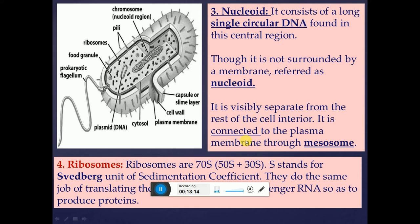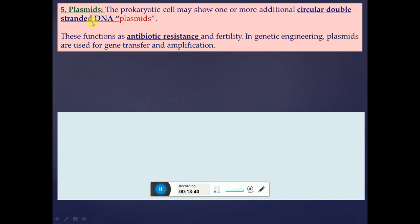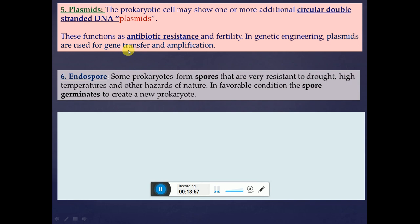Ribosomes in prokaryotes are 70S type — large subunit 50S and small subunit 30S — where S stands for the Svedberg unit of sedimentation coefficient. They translate mRNA to produce proteins. The plasmid is an additional small circular double-stranded DNA found in prokaryotic cells; its functions include antibiotic resistance and fertility. In genetic engineering, plasmids are used for gene transfer and gene amplification. In adverse conditions, some prokaryotes form endospores that are highly resistant to drought, high temperature, and other hazards, germinating to create an active prokaryote under favorable conditions.